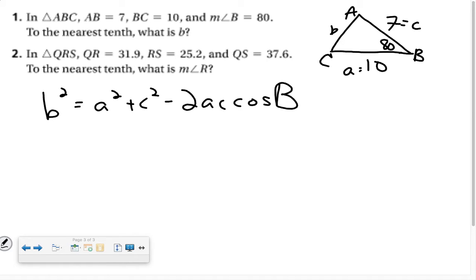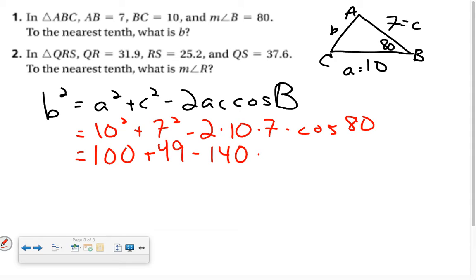So let's plug everything in. B squared equals 10 squared plus 7 squared minus 2 times 10 times 7 times the cosine of 80. Let's simplify this. I've got 100 plus 49 minus 140 times the cosine of 80.